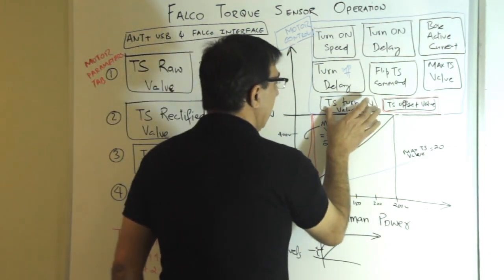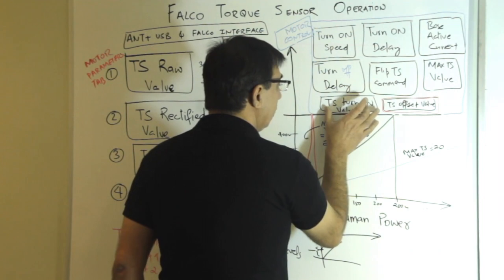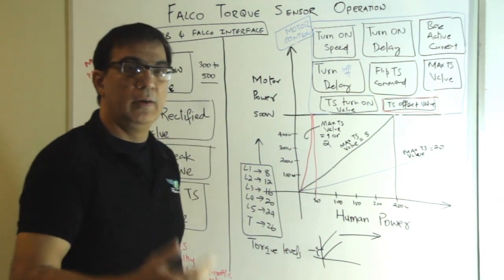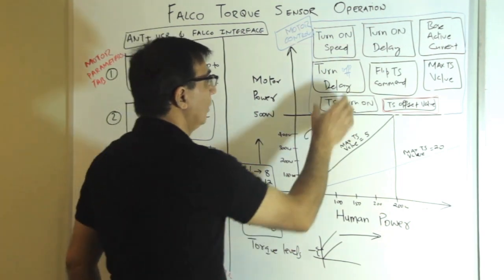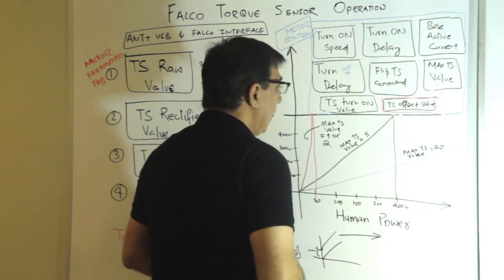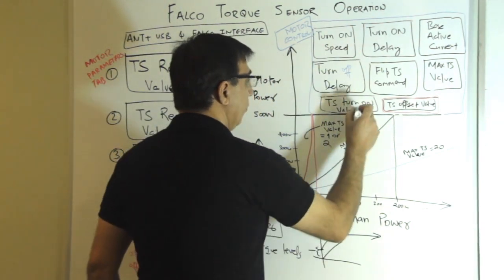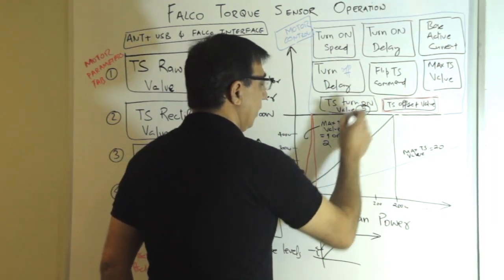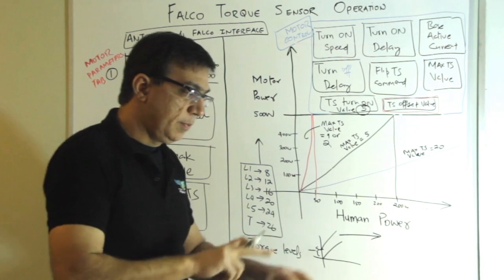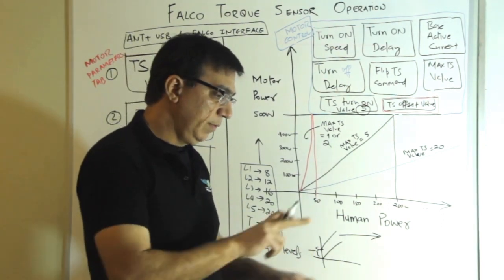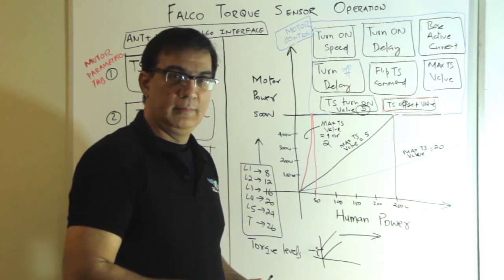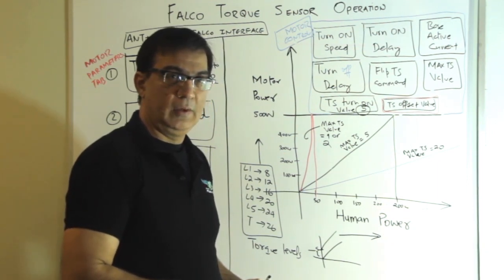TS turn on value. Now this is the value at which the torque sensor begins to turn on. It is similar to the turn on speed. So we have normally a default value here of five. And that five basically means that when I start producing five newton meter of torque on my cranks, then only motor should turn on.